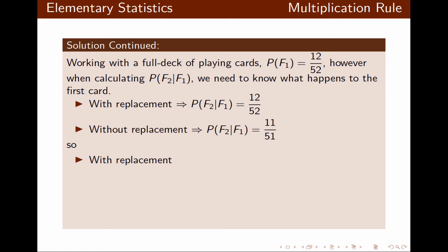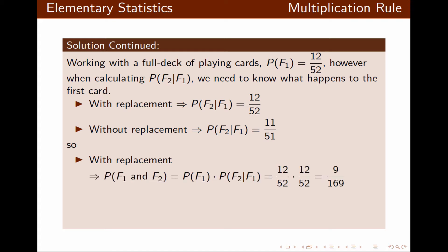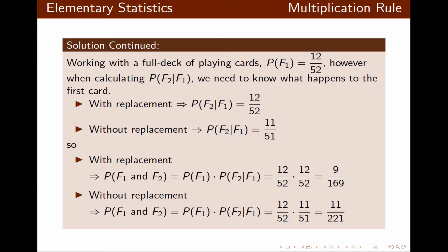With replacement, probability of F1 and F2 is 12 over 52 times 12 over 52, which reduces to 9 over 169. Without replacement, it is probability of F1 times probability of F2 given F1, so 12 over 52 times 11 over 51, and the final answer is 11 over 221.